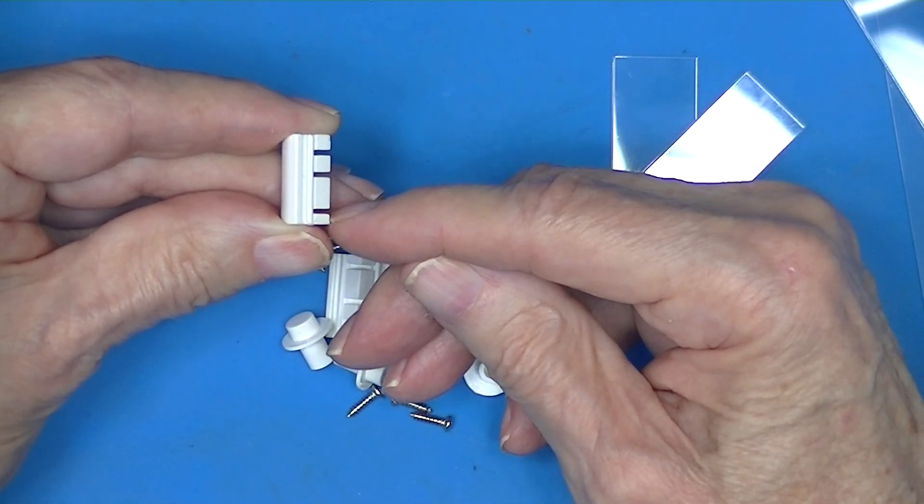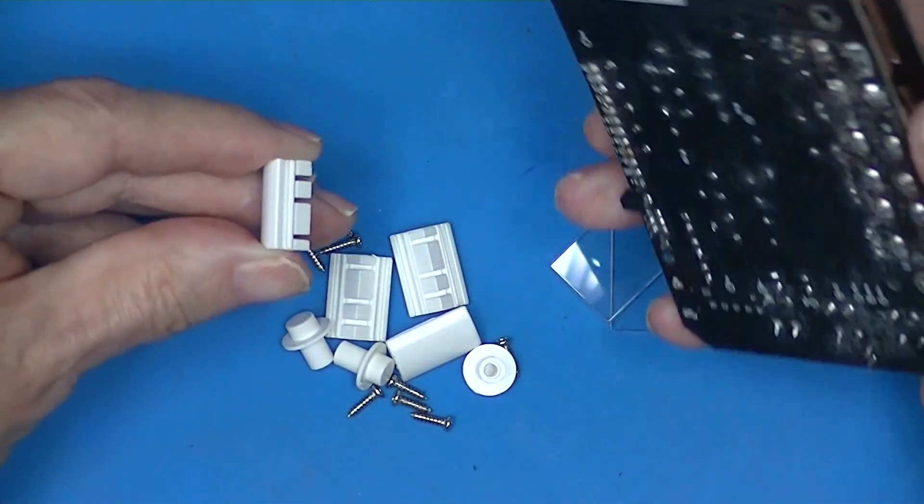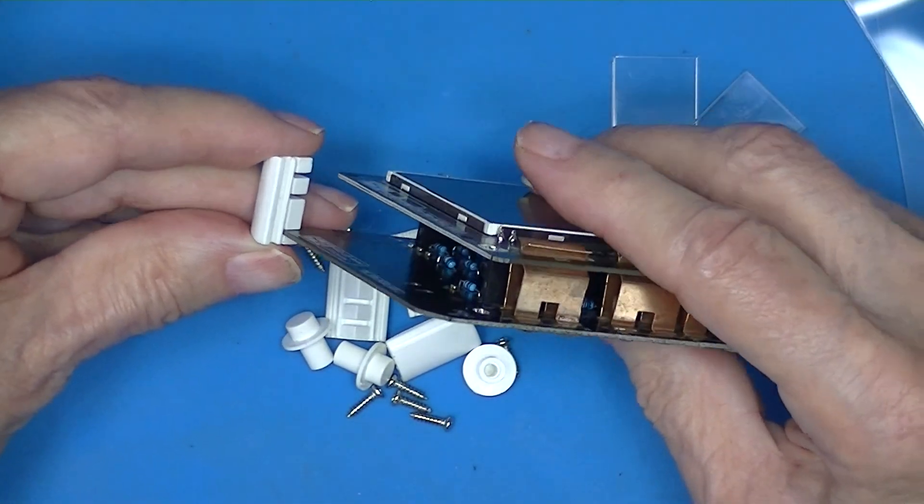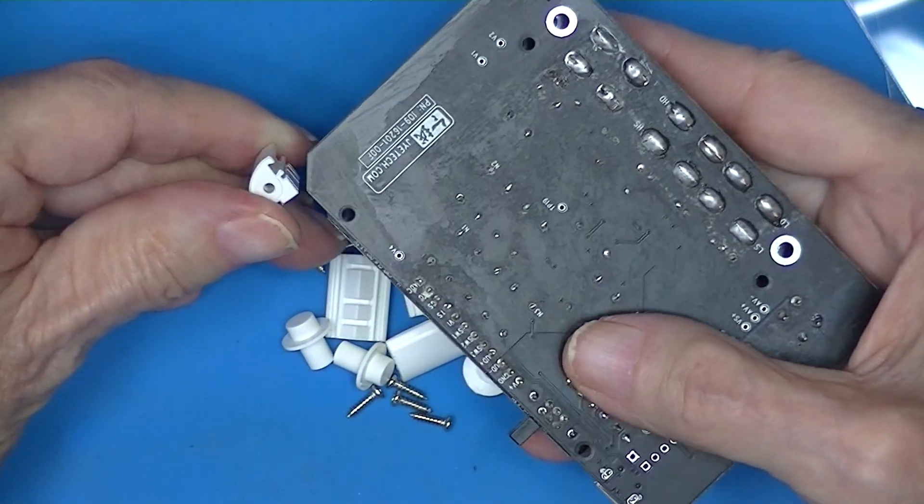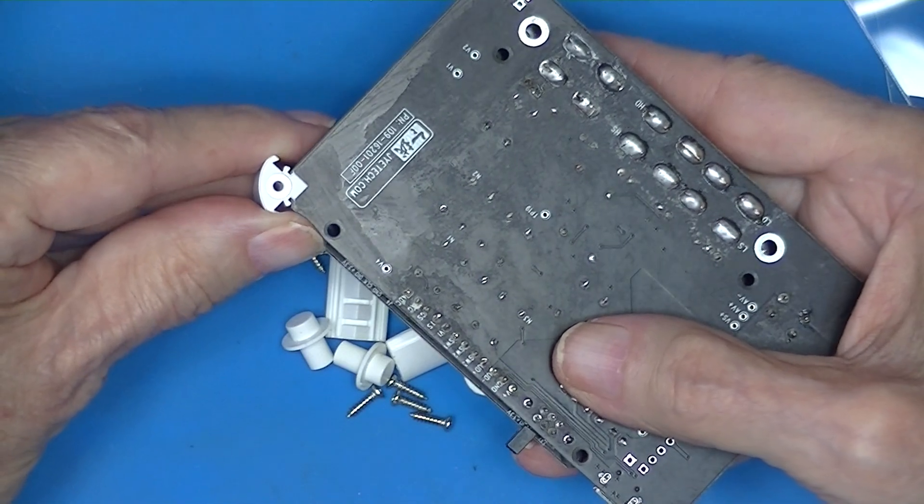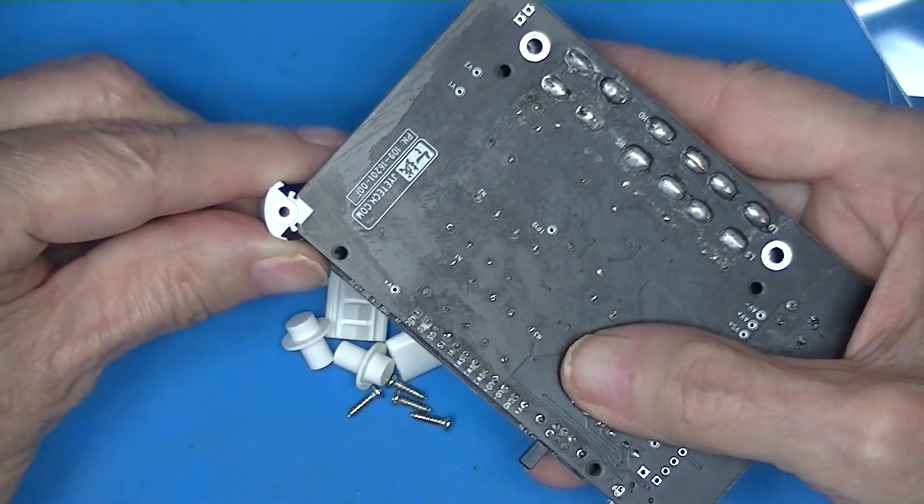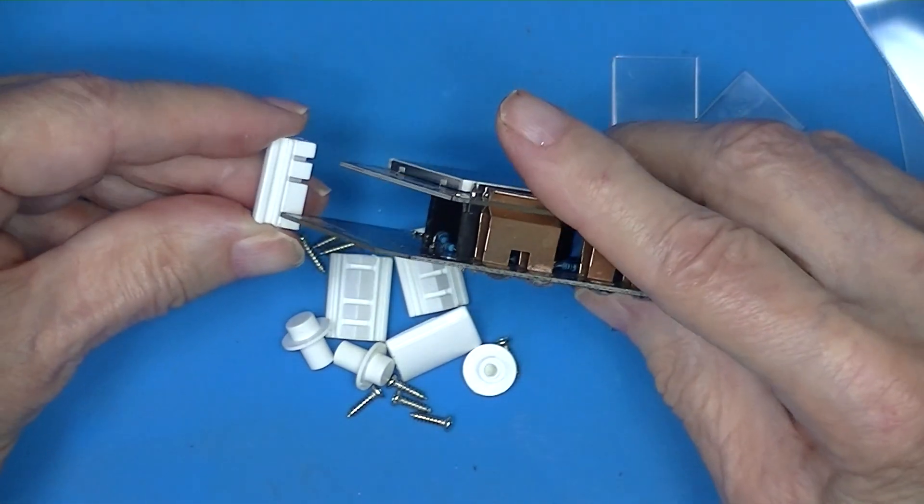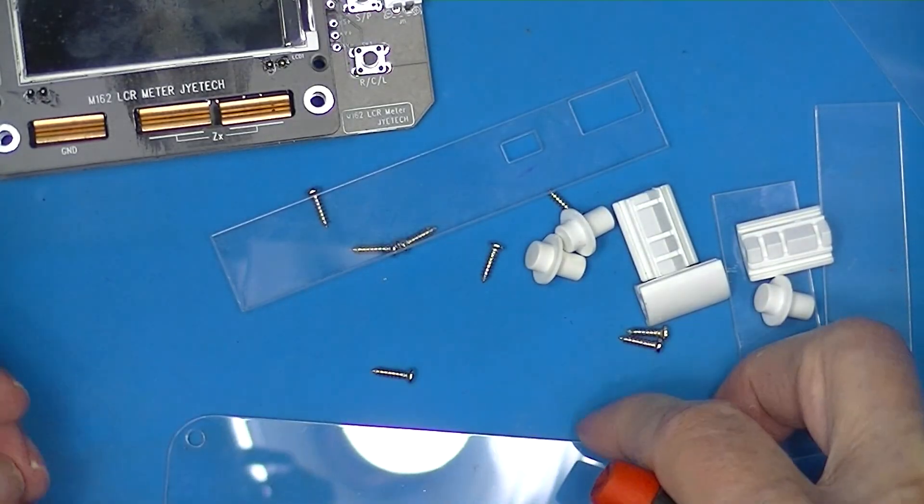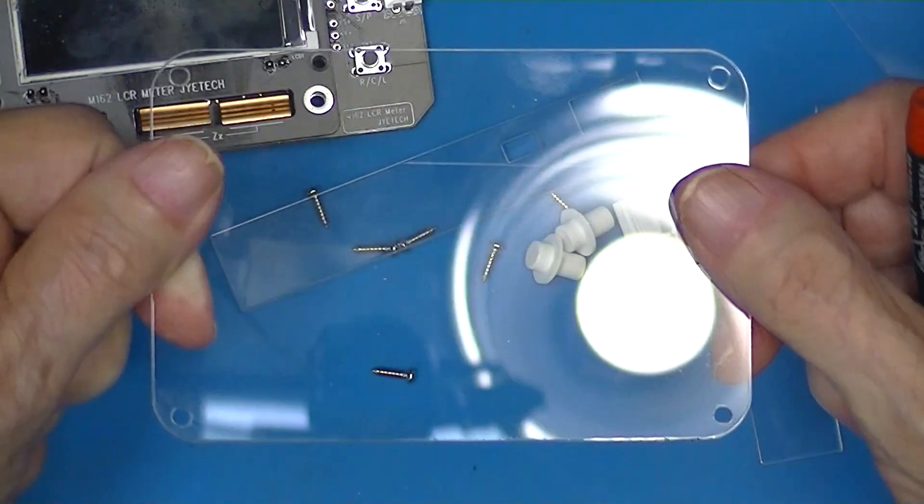That's the bottom. The reason we do this is so that the board will fit like this. Just like that. And we want to use the bottom. The bottom, of course, has no holes in it.